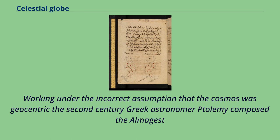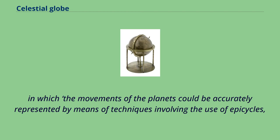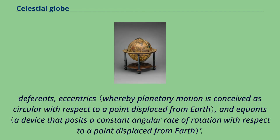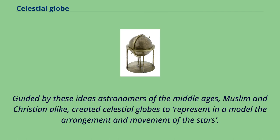Working under the incorrect assumption that the cosmos was geocentric, the 2nd-century Greek astronomer Ptolemy composed the Almagest, in which the movements of the planets could be accurately represented by means of techniques involving epicycles, deferents, eccentrics, and the equant. Guided by these ideas, astronomers of the Middle Ages, Muslim and Christian alike, created celestial globes to represent in a model the arrangement and movement of the stars.